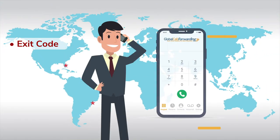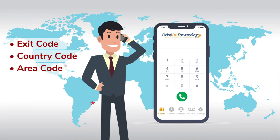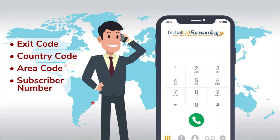The plus sign or the USA exit code 011, Brazil's country code or international prefix 55, Sao Paulo's area code 11, and the subscriber number. In this example let's say the local subscriber number is 12345678. So to call Sao Paulo from Miami you will dial: exit code 011, followed by country code 55, then area code 11, and then the local number 12345678.